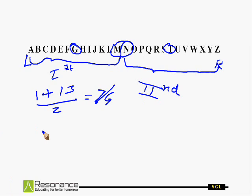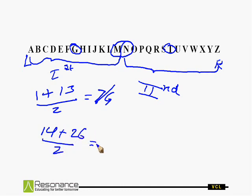Similarly, the middlemost letter of the second half is the average of the codes of N and Z. N is at the 14th position and Z is at the 26th position. Adding 14 and 26 and dividing by 2 gives 20, and the 20th letter is T. So T is the middlemost letter of the second half. This is the first type of question based on the Alphabet Test — finding the middlemost letter of a series.